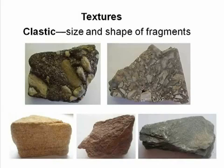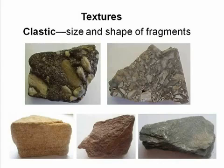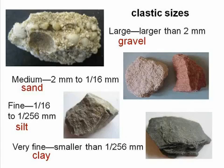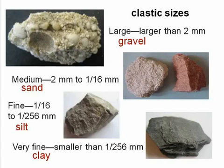The texture of sedimentary rocks relates to the divisions. Clastic division sedimentary rocks have a clastic texture. The clastic texture is further differentiated by the size and shape of the fragments that are glued together. Clastic sizes have four classifications: large, containing many fragments larger than 2 mm (considered gravel); medium, containing predominantly sand-sized pieces ranging from 2 mm to 1/16th of a millimeter; fine, containing primarily silt-sized fragments ranging from 1/16th to 1/256th of a millimeter; and very fine, composed of clay-sized particles smaller than 1/256th mm.